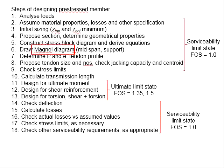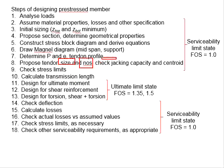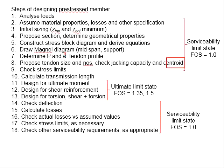From the Magnus diagram, determine appropriate P and E as well as the tendon profile for the pre-stressed member. The proposed P, E, and tendon profile need to be within the visible area of the Magnus diagram. Next, you need to propose the tendon size and number and check the checking capacity as well as the centroid, so that it complies with the proposed E and proposed P.